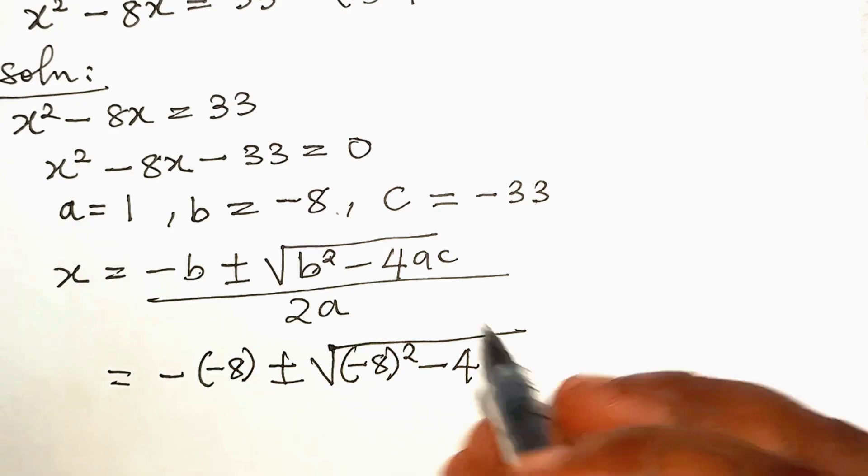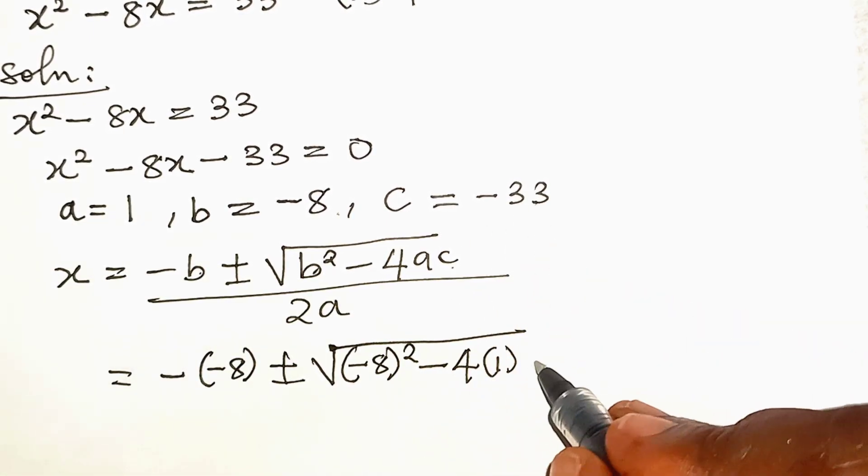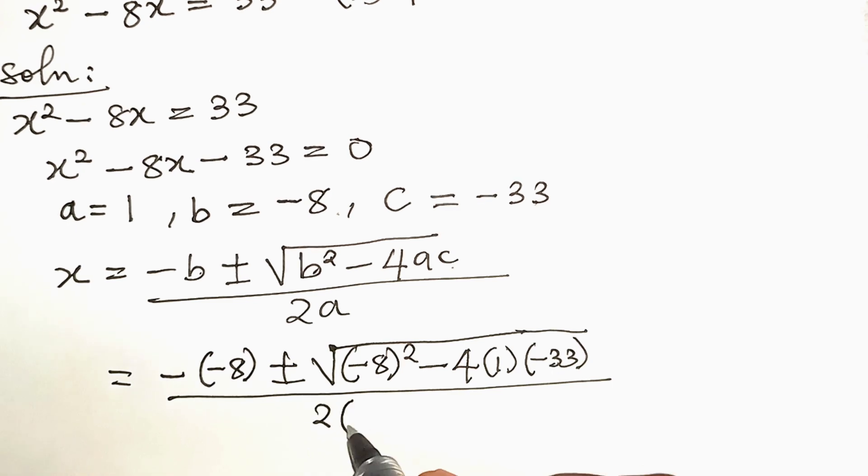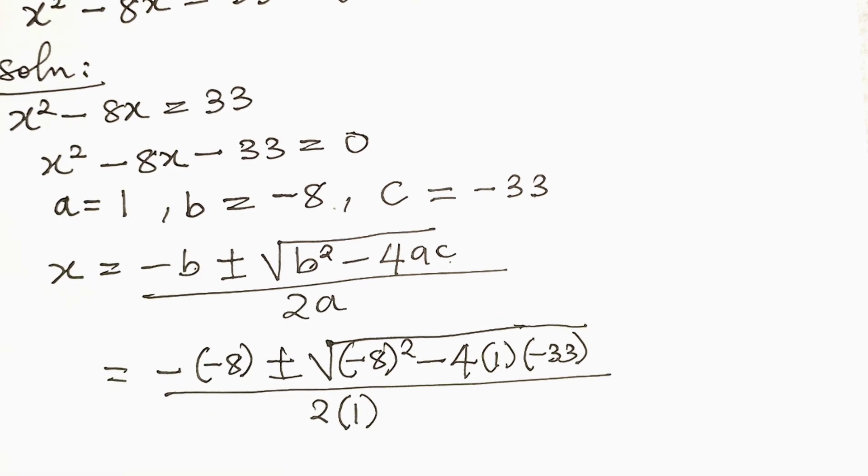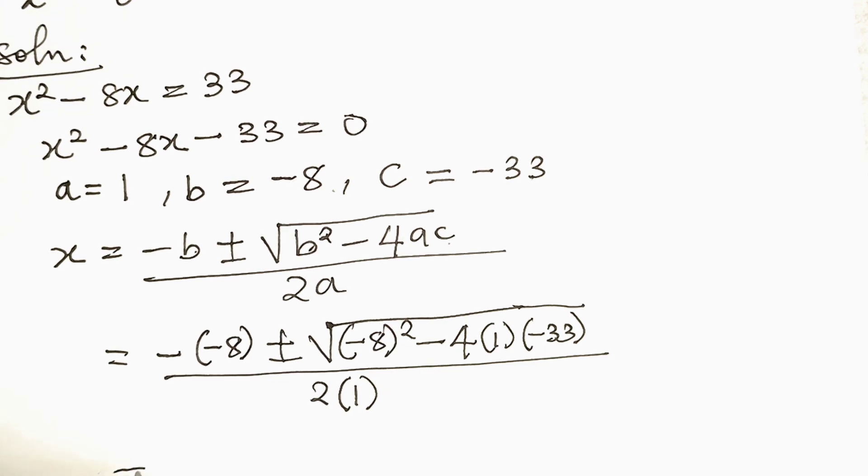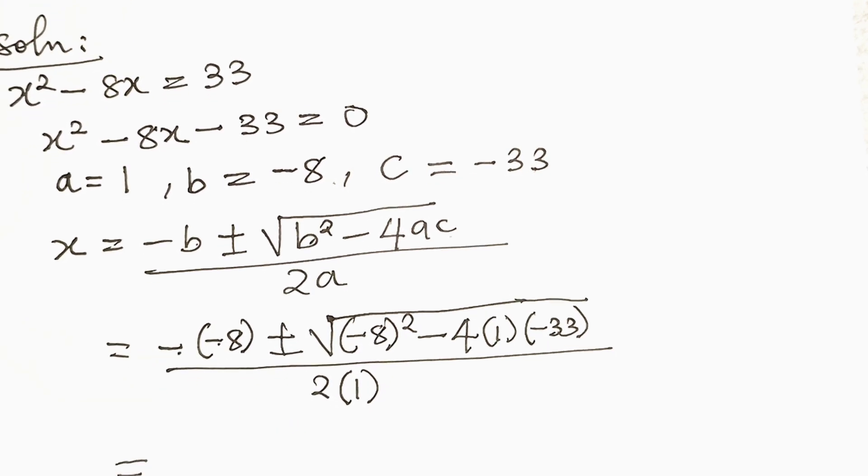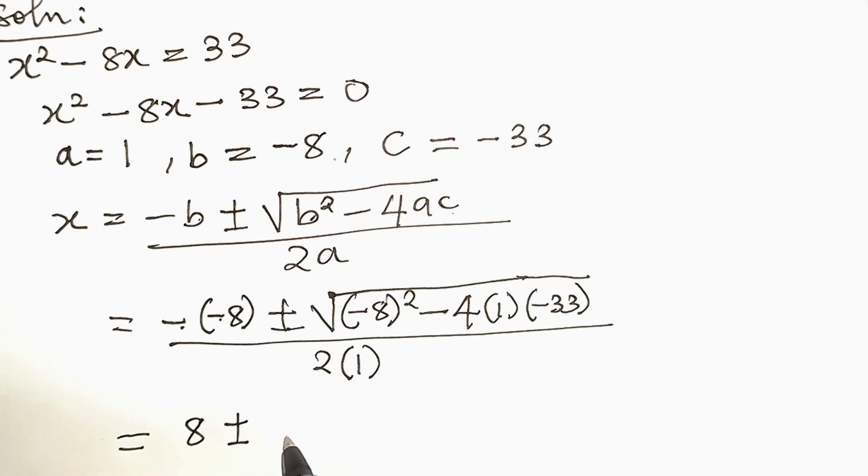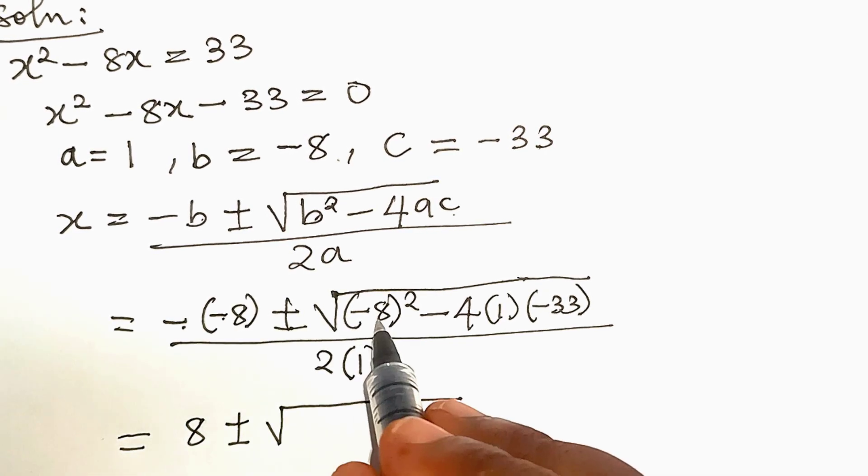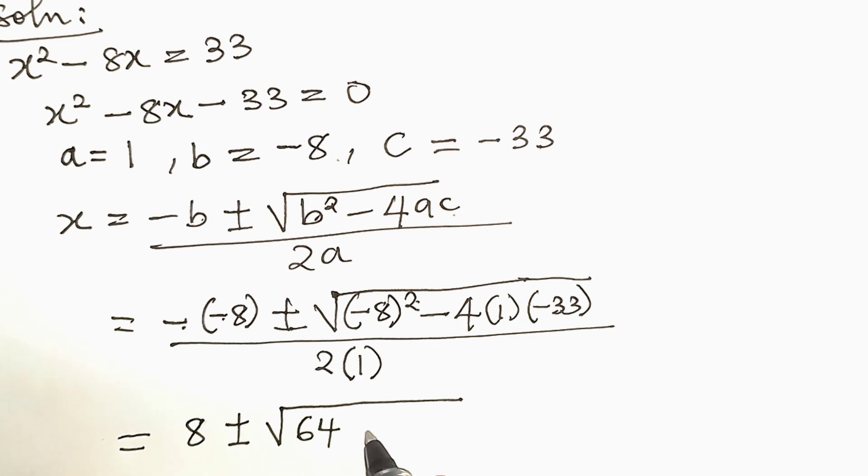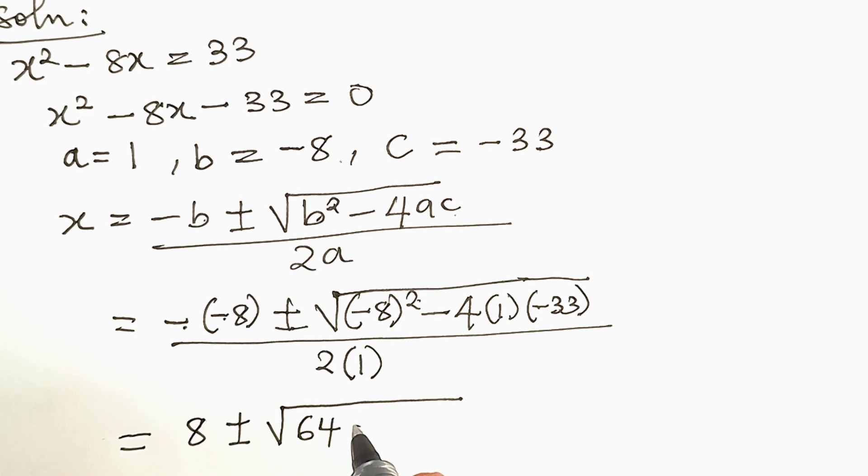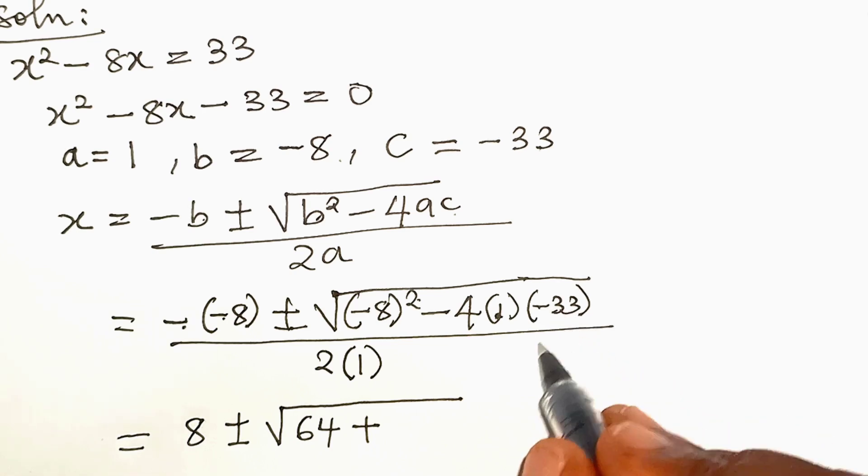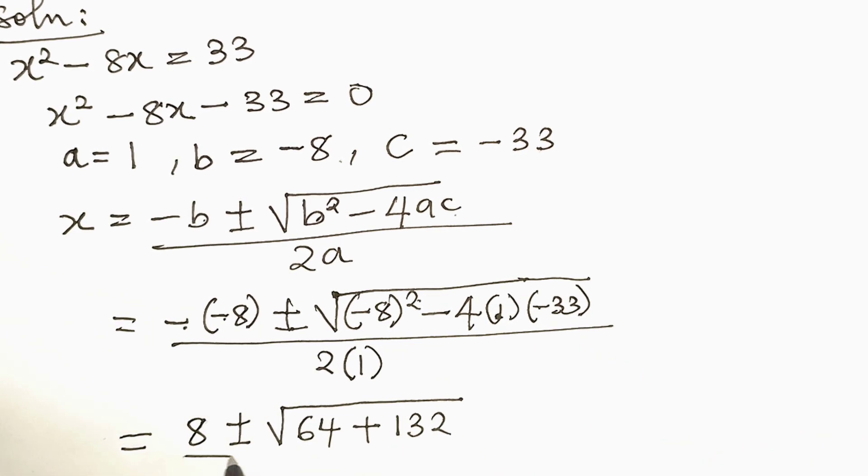a is 1. So, we have 1 here. c is minus 33. We have minus 33 here. All divided by 2a. A is 1, we will multiply by 1. So this is equal to, minus times minus is plus. So we have 8 plus or minus square root of minus 8 squared is 64. Minus times minus is plus. 4 times 1 times 33 is equal to 132. Divided by 2.